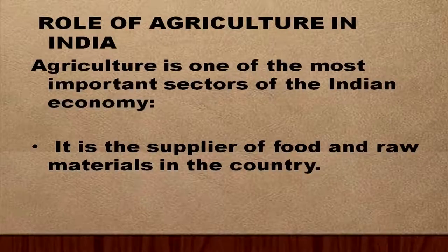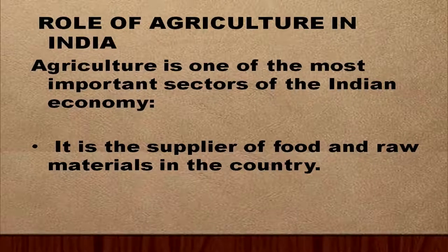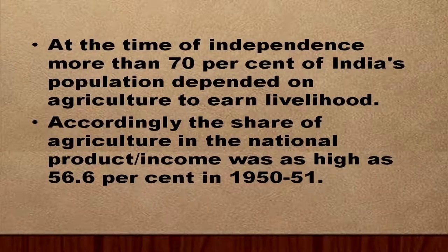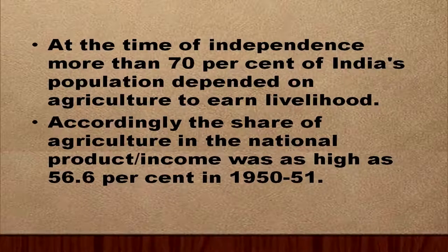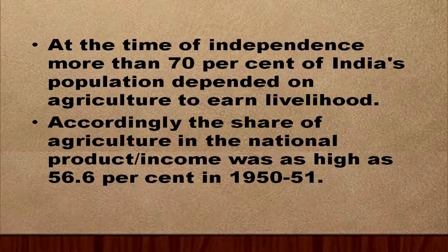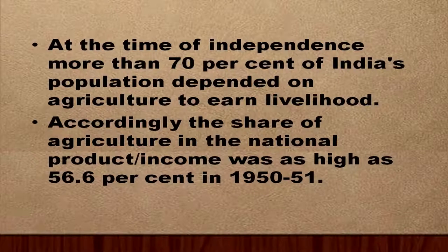Agriculture is one of the most important sectors of the Indian economy. It is the supplier of food and raw materials in the country — all the food we eat and raw materials such as cotton, jute, and other outputs are supplied by the agricultural sector. At the time of independence, more than 70% of India's population depended on agriculture to earn their livelihood. The share of agriculture in the national product was as high as 56.6% in 1950-51.